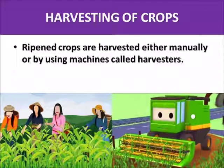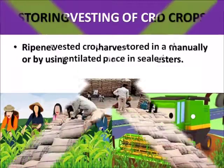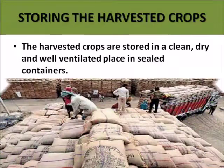Next we have harvesting of crops. The ripened crops are harvested either manually — like ladies do for tea plants — or by using machines called harvesters. The machines which help in harvesting the crops are called harvesters.